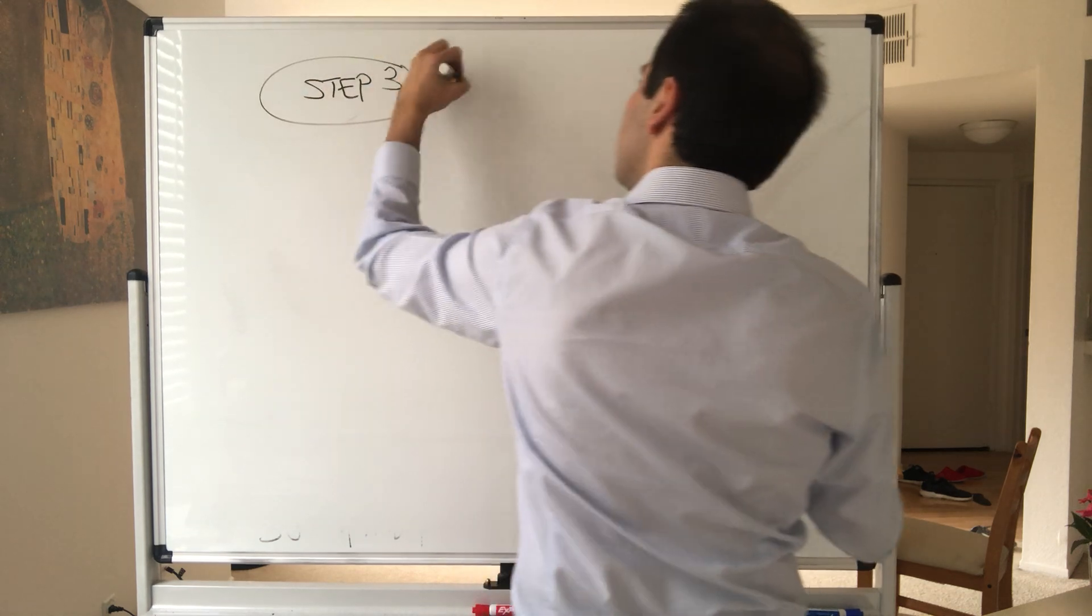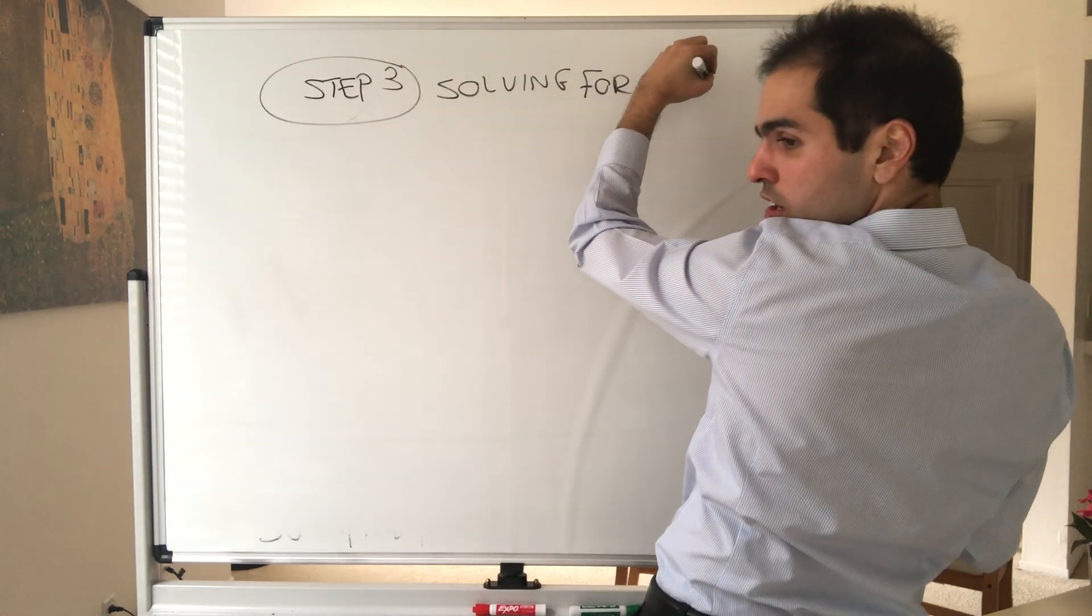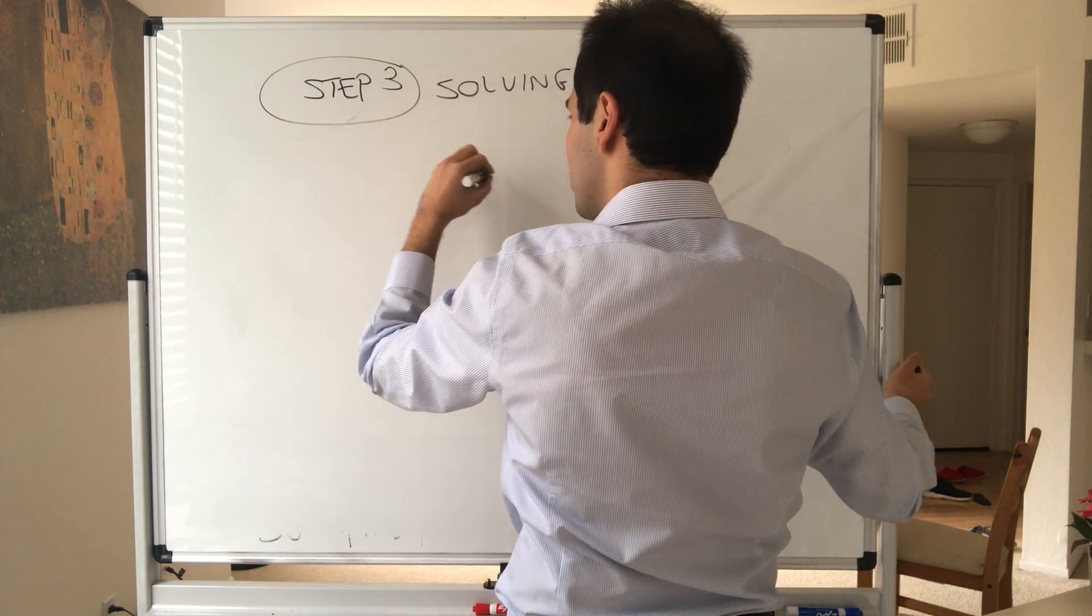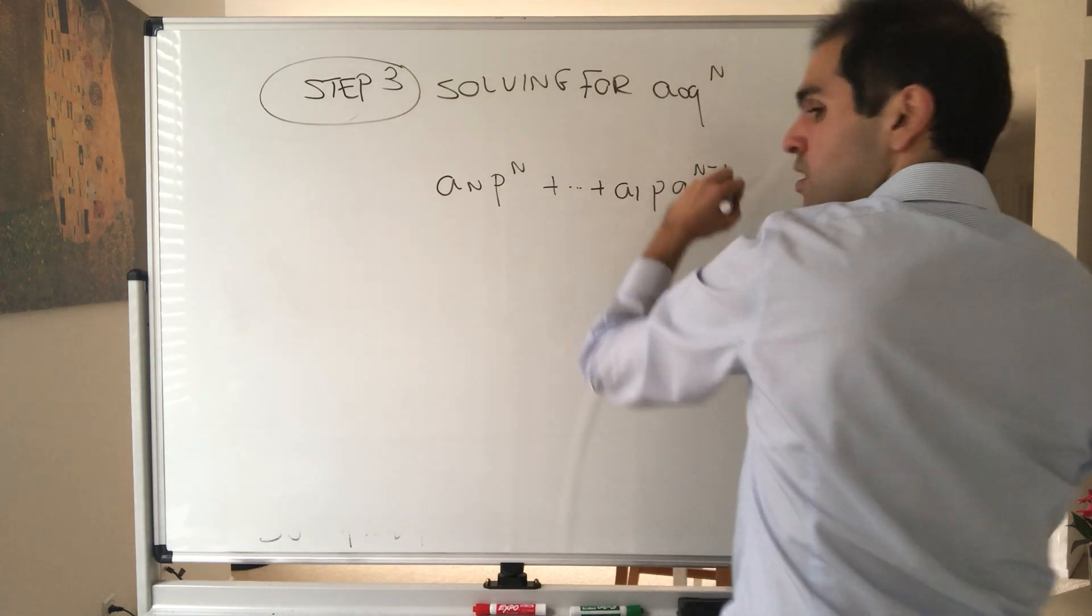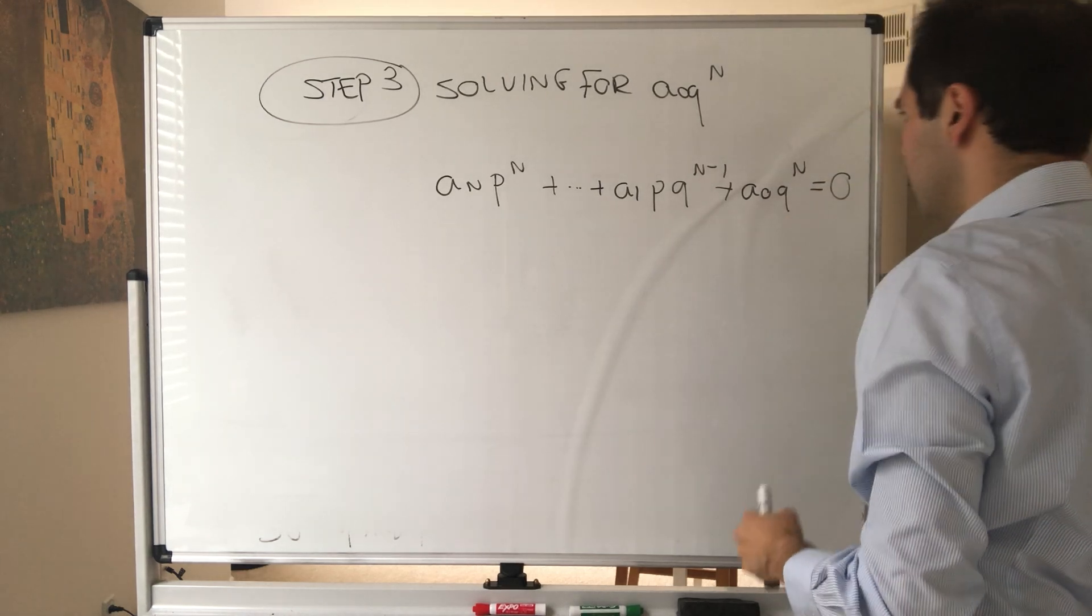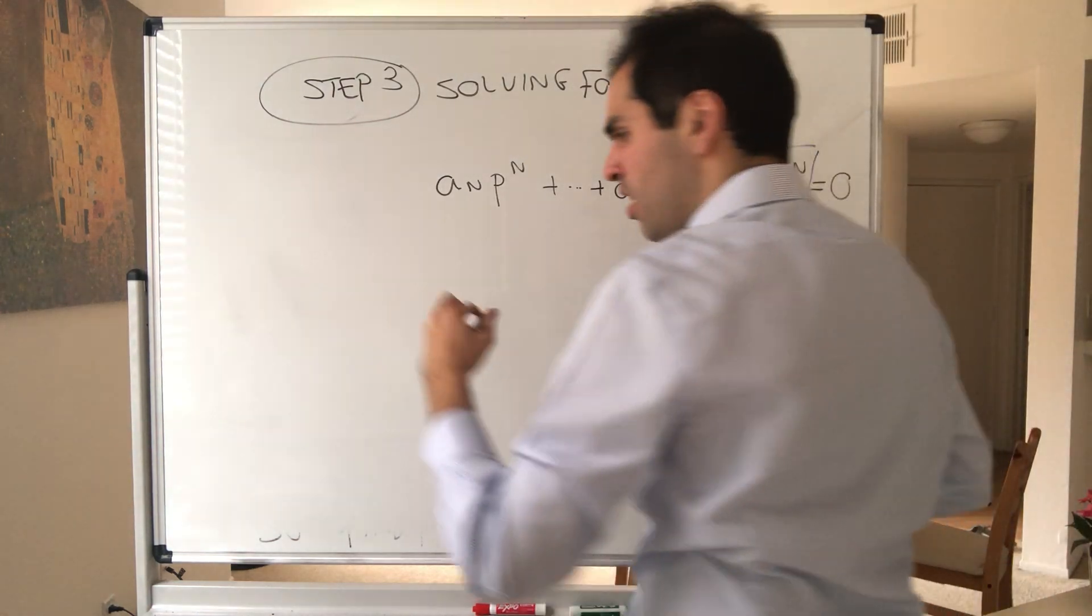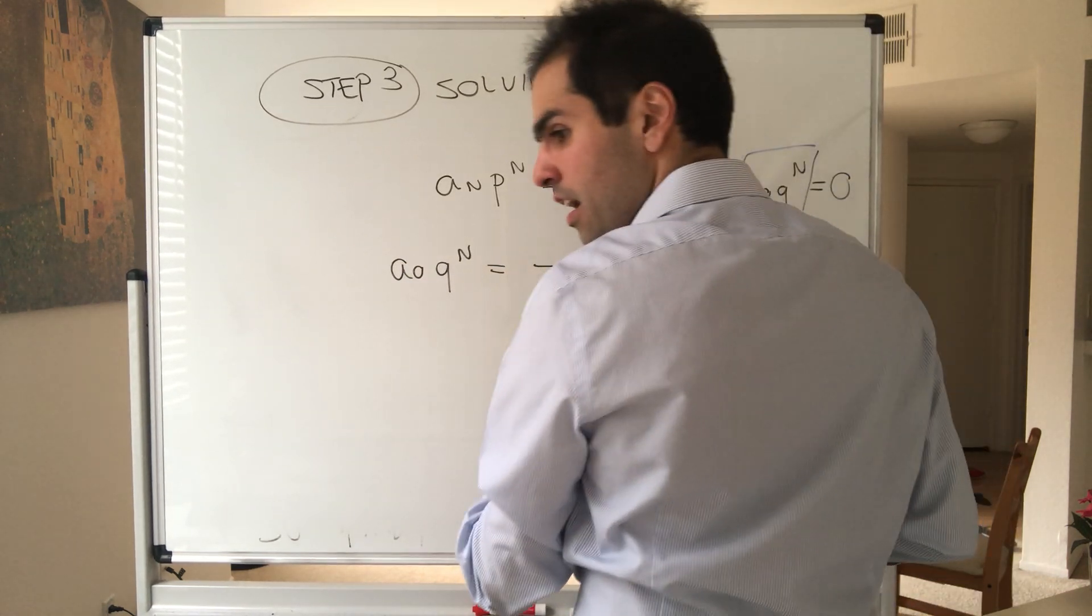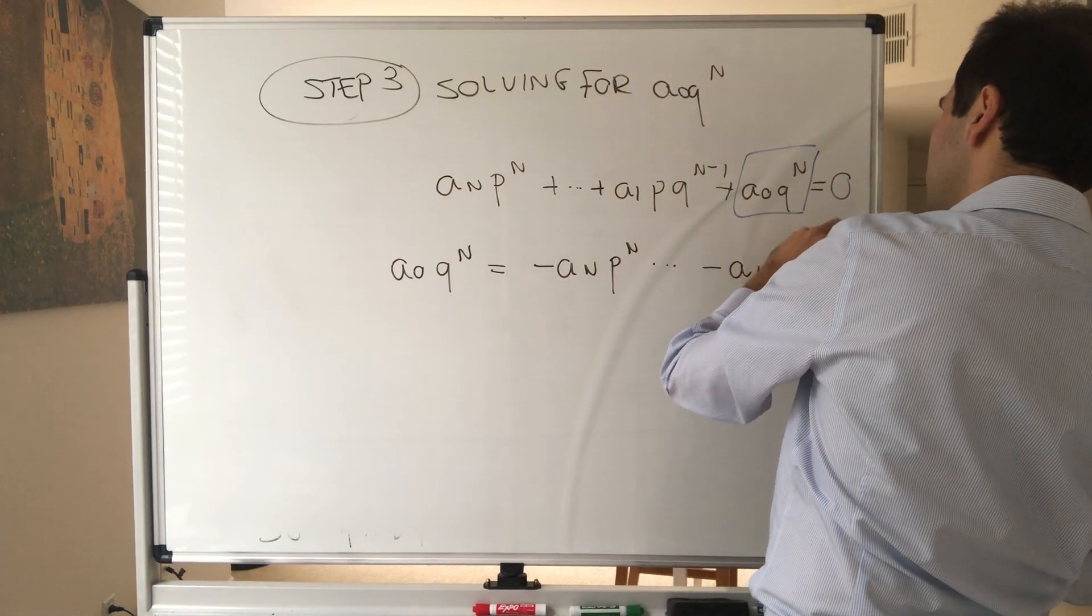Step 3: solving for a_0 q^n. Again, forget everything I talked about and now just solve for a_0 q^n. Then our original equation was a_n p^n plus dot dot dot plus a_1 p q^(n-1) plus a_0 q^n equals 0. And now we want to solve for this. And so what we get is a_0 q^n becomes minus a_n p^n dot dot dot minus a_1 p q^(n-1).